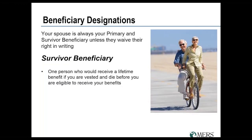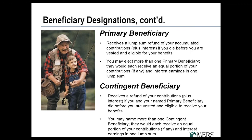The most important beneficiary for most MERS participants is the survivor beneficiary — the one person eligible for a lifetime benefit if you pass away prior to drawing the retirement benefit. That must be one living person. If you are married, your spouse by default is your survivor beneficiary, and they would have to sign off on the form if you named anyone else. You also have the ability to name both a primary and a contingent beneficiary. If married, your primary beneficiary defaults to your spouse unless they sign off on the form.